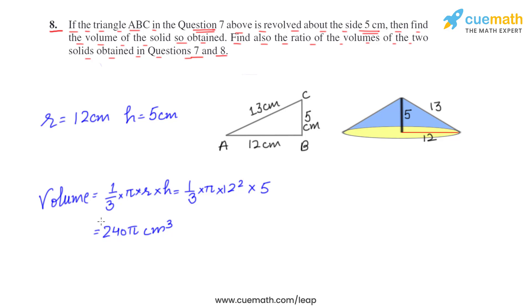This is the volume when it is revolved around the 5 centimeter side. It is also asking about the ratio of the volumes we got in question 7 and question 8. Ratio equals volume in question 7 by volume in question 8. In question 7 we got 100π cubic centimeters, and in question 8 we have got 240π cubic centimeters. So this comes out to be 5/12 or 5 ratio 12.